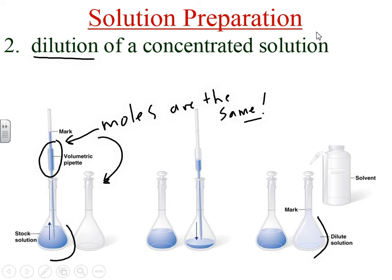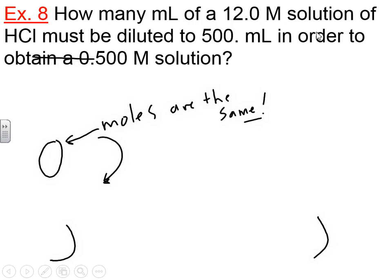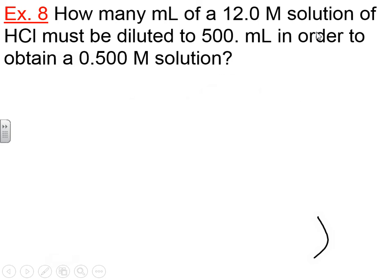So let's go ahead and work out a problem that does exactly that. We have to dilute an original solution. The question asks: how many milliliters of a 12 molar solution of HCl must be diluted to 500 mL in order to obtain a 0.5 molar solution? Our stock solution is 12 molar, our final one is 0.5 molar, and we need 500 milliliters of the 0.5 molar. So we'll go through moles — let's find out how many moles we need in our dilute solution.